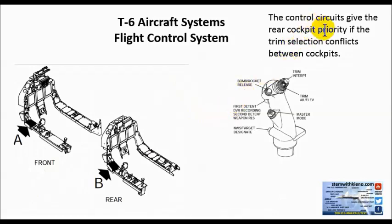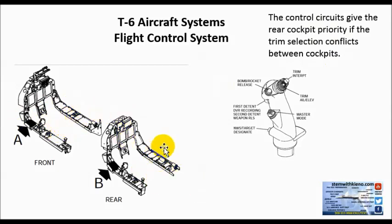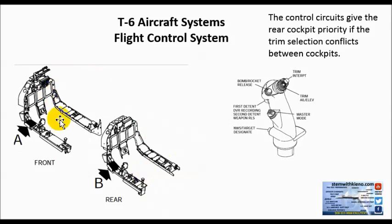The control circuits give the rear cockpit priority if the trim selections conflict between cockpits. So if the student naval aviator does something undesirable, the instructor pilot can take primary control — the control is prioritized to the instructor pilot's inputs as opposed to the student naval aviator's inputs up front.